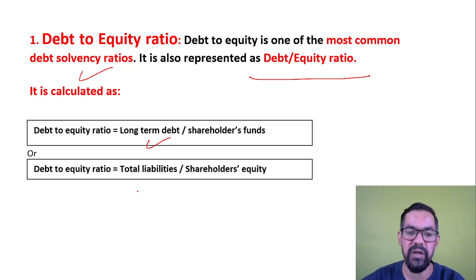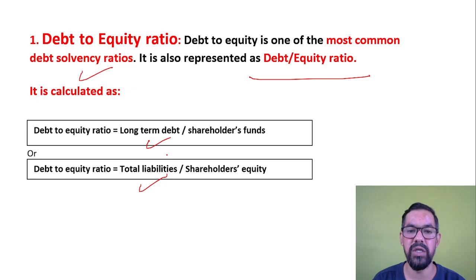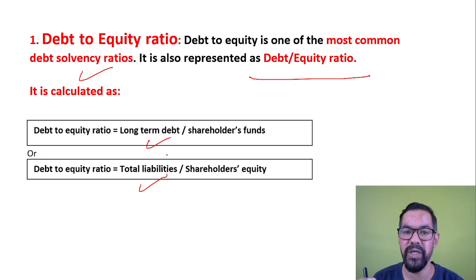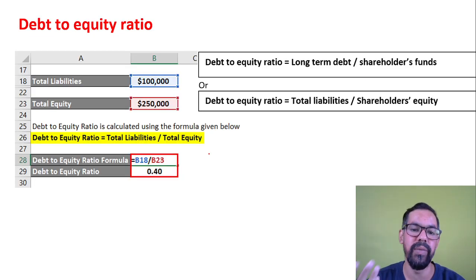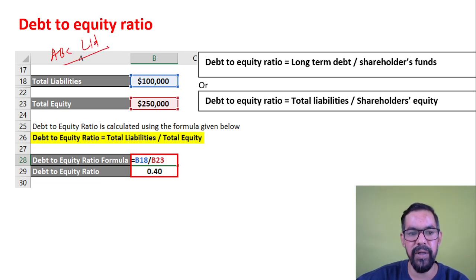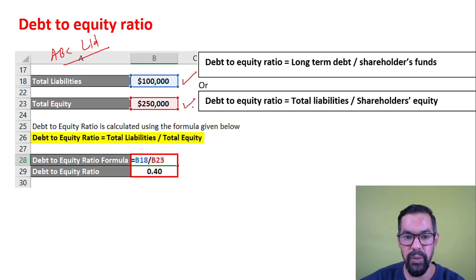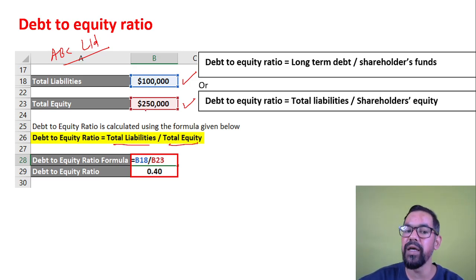Debt-to-equity ratio is one of the most common solvency ratios, represented as debt divided by equity. The formula is: long-term debt divided by shareholders' fund, or total debt divided by total liability. As we discussed in the conventions of accountancy — if you started some XYZ business and as the owner contributed 5 crore rupees, that amount is a liability for that XYZ company. So total liability and shareholders' equity make up the formula. Let's say ABC Limited has total liabilities of 1 lakh rupees and total equity of 2 lakh 50 thousand.